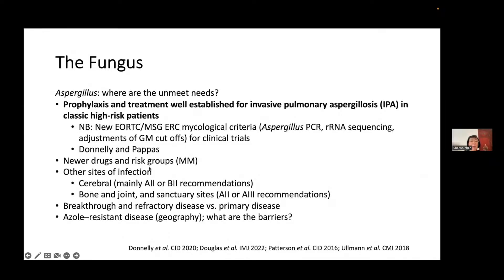There are newer drugs and risk groups outside hematology patients. There are also other sites of infection moving away from lung infection per se — cerebral infection, where recommendations for treatment using antifungal agents are either A2 or B2 but there are no RCTs to rely on. What about bone and joint infection and infection at sanctuary sites? There are also breakthrough infections and refractory disease, as opposed to primary disease where most antifungal trials focus. And finally, azole-resistant disease, in selected geographic regions.